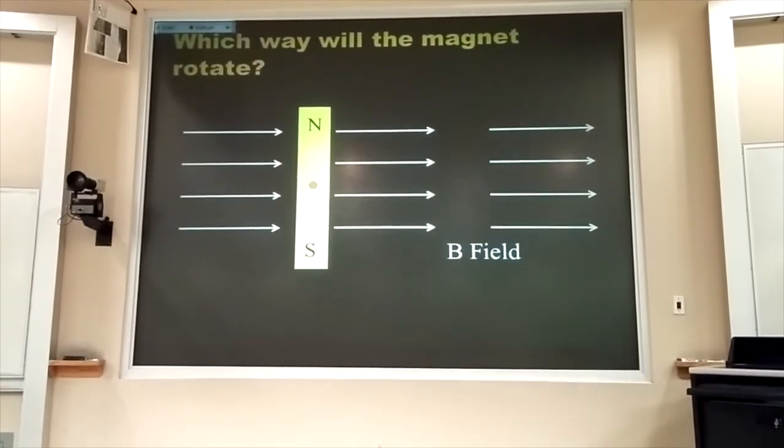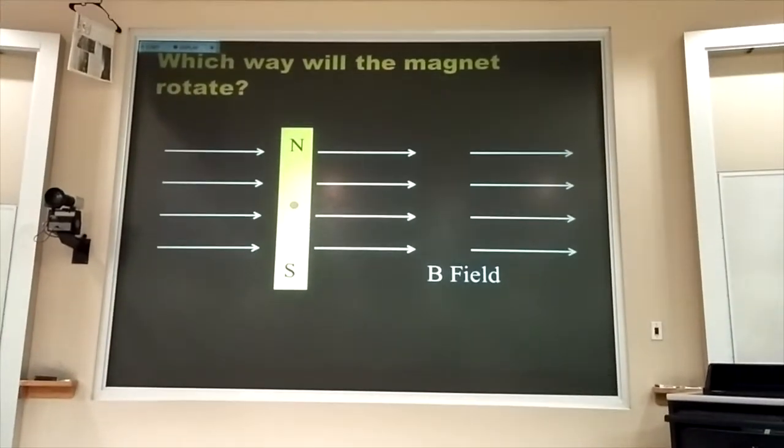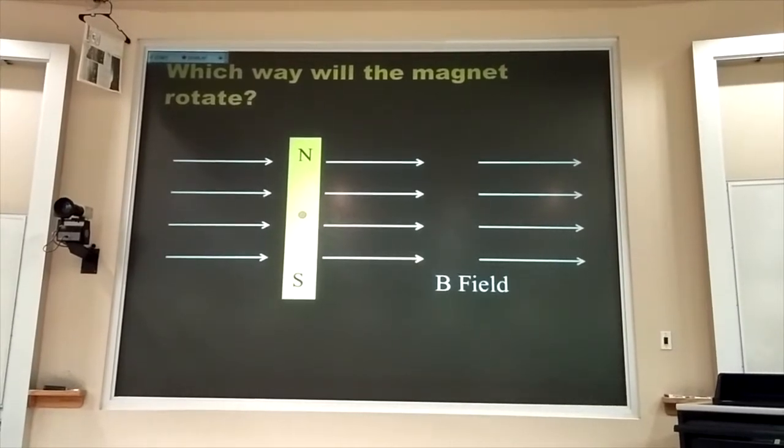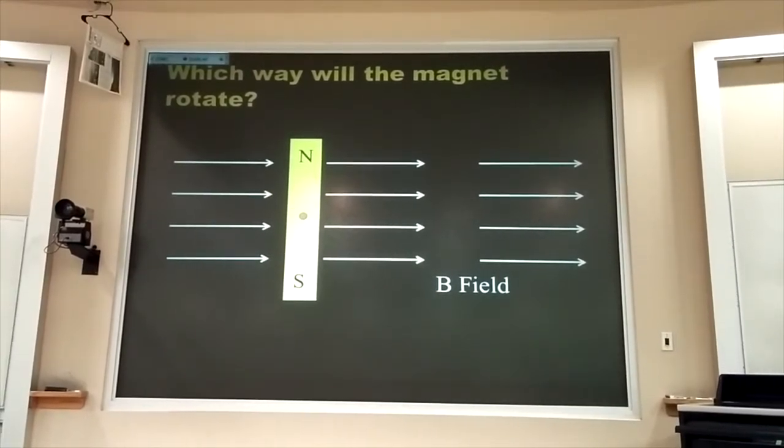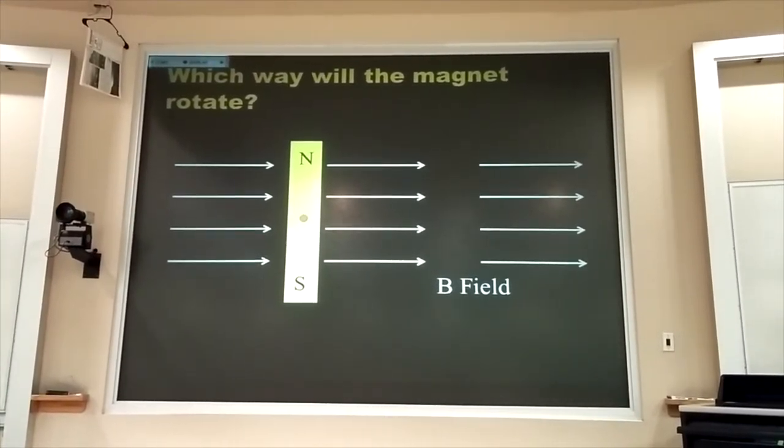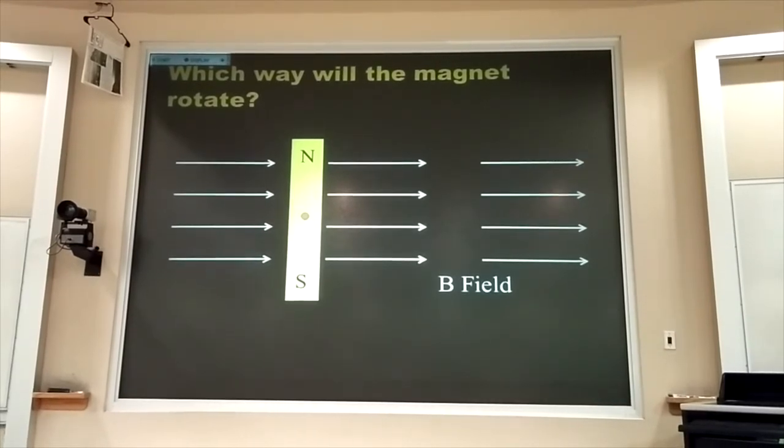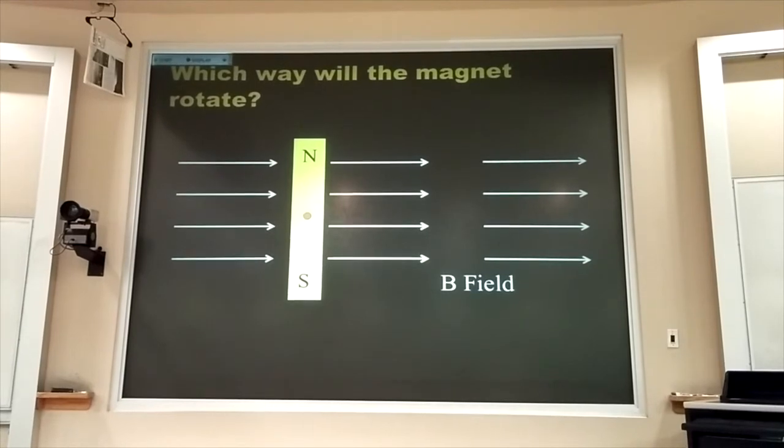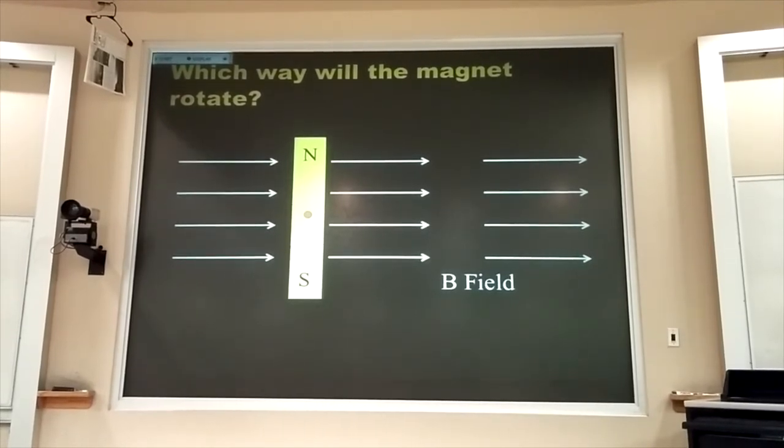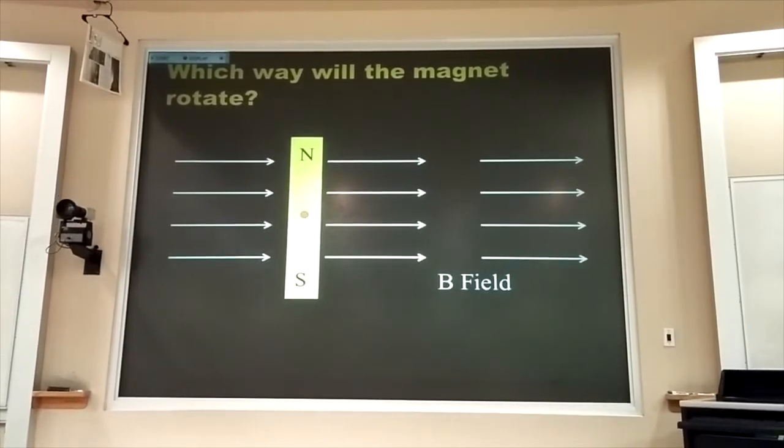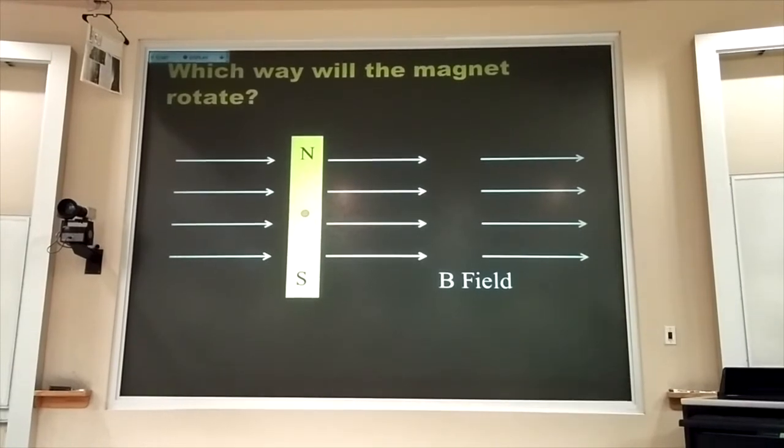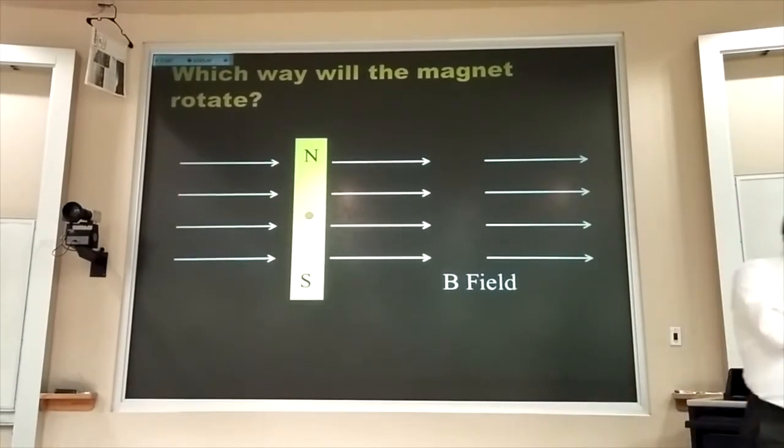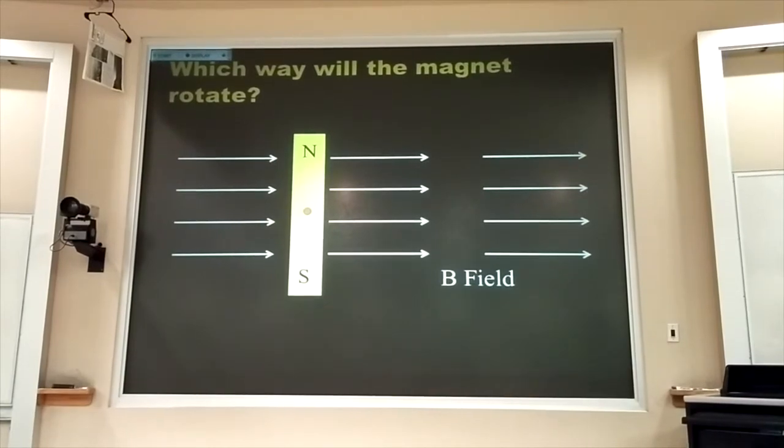Now, just to make sure we're on the bus - that bar magnet is free to rotate about that red dot. It's going to rotate one quarter turn. It finds itself in a magnetic field pointing towards the open door. Will it rotate clockwise or counterclockwise? Tell your neighbor.